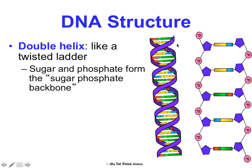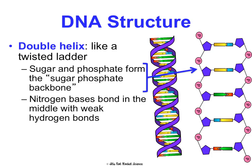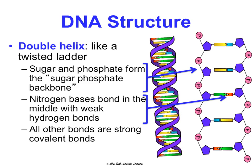That sugar-phosphate backbone is the purple part in this molecule. The nitrogen bases — shown here in yellow, blue, green, and red — are like the rungs of the ladder; these are the base pairs, and they're held together by weak hydrogen bonds. All the other bonds in this structure are strong covalent bonds, so those bonds are not going to break very easily.